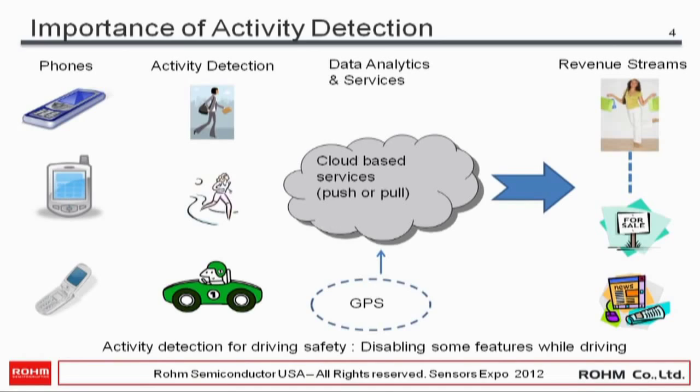Service providers already have information about who the subscriber is — they know roughly where they're located via GPS, assuming the customer enables the data to be made available. Activity adds one more dimension. With this data you could do analytics on the cloud and enable cloud-based services, which could lead to additional revenue streams.